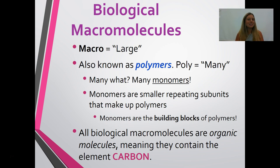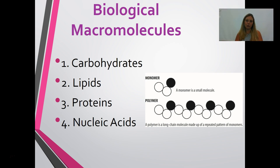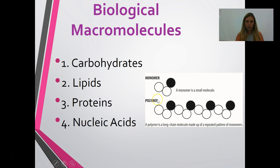All biological macromolecules are organic molecules, meaning they contain the element carbon. Carbon is the element essential for life — from bacteria to the most advanced animals, all organisms share the element carbon. The four biological macromolecules that all living things have are carbohydrates, lipids, proteins, and nucleic acids. Each monomer is a subunit, and many monomers together make up the polymer — the macromolecule.